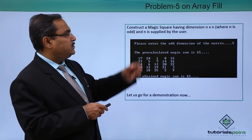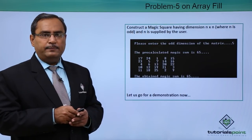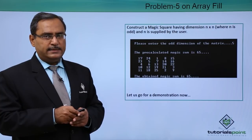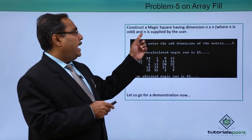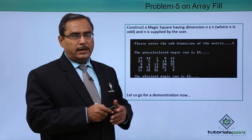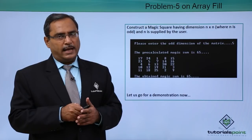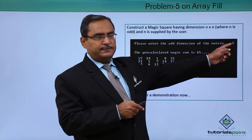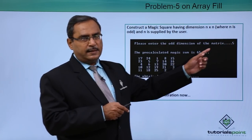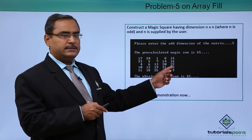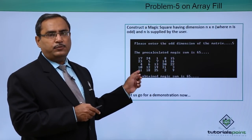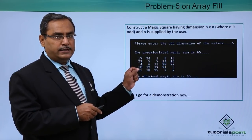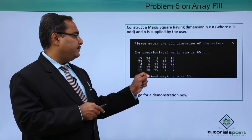Construct a magic square having dimension N cross N, where N is one odd number and N is supplied by the user from the keyboard as input. If the value of N equal to 5 has been supplied, then the matrix will have the size 5 cross 5. The numbers will be ranging from 1 to 25.